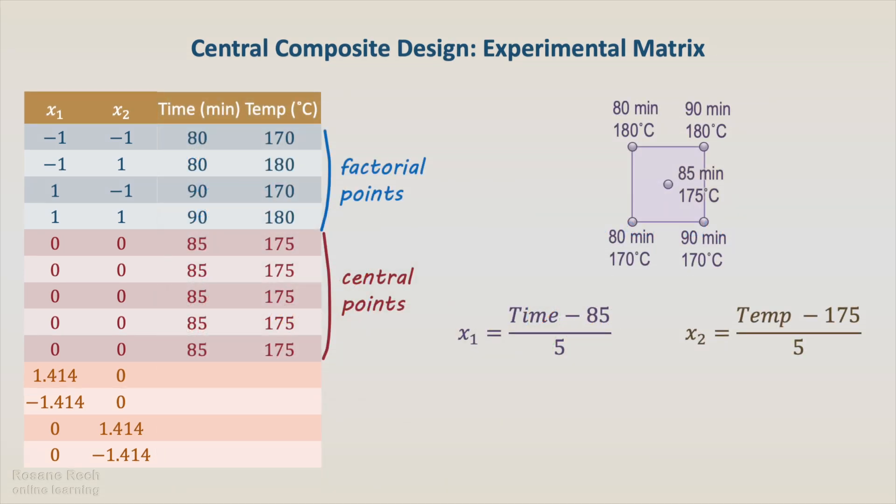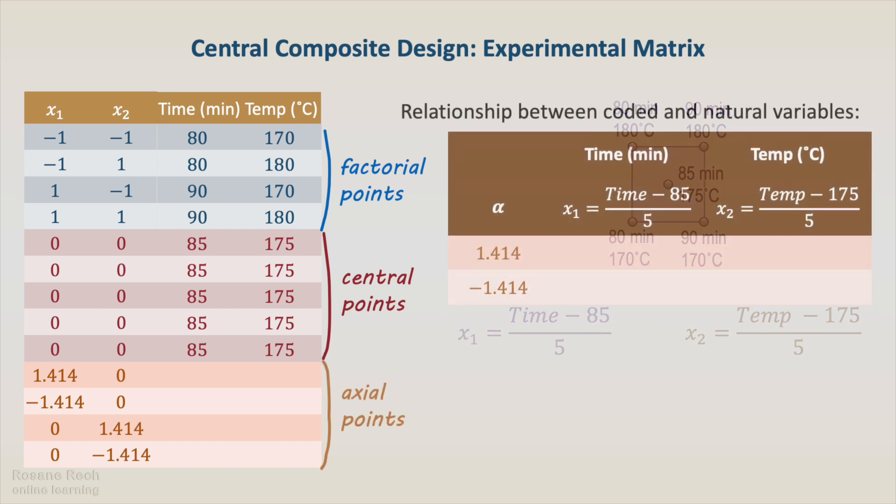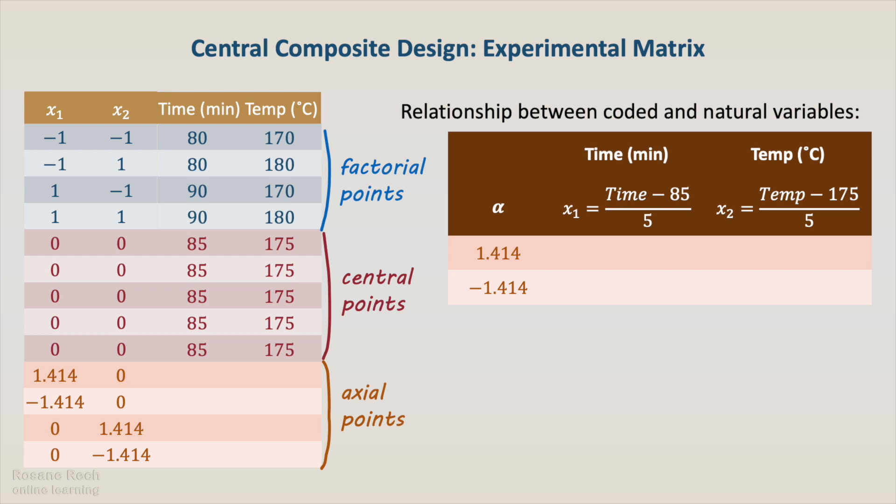Let's now go back to our last design and augment it with axial points. We have tested the factorial design with central points, and the relationships between the coded and the natural variables are shown in the slide. We can use these relationships to calculate the axial values of time and temperature.